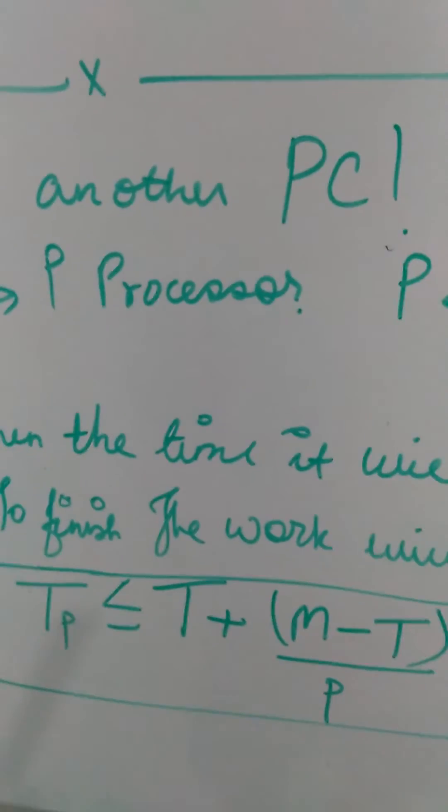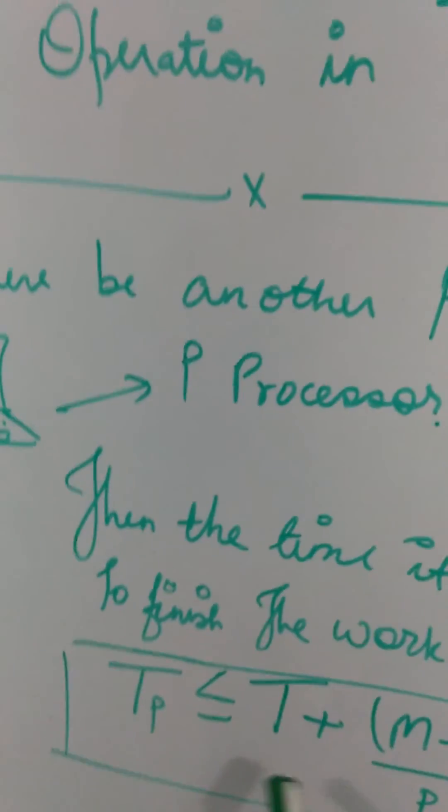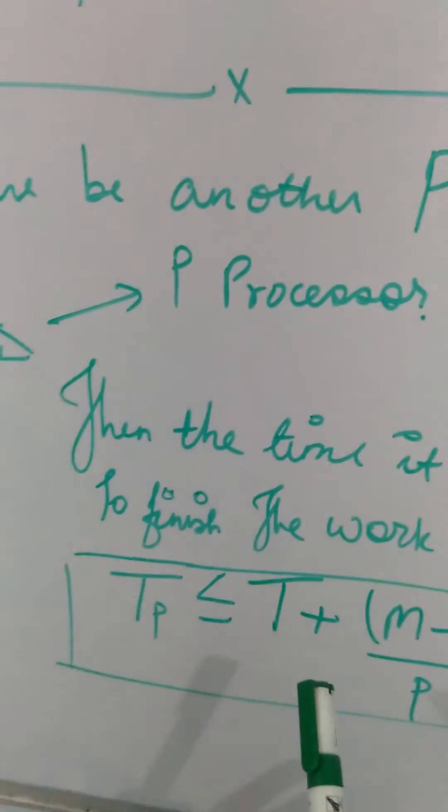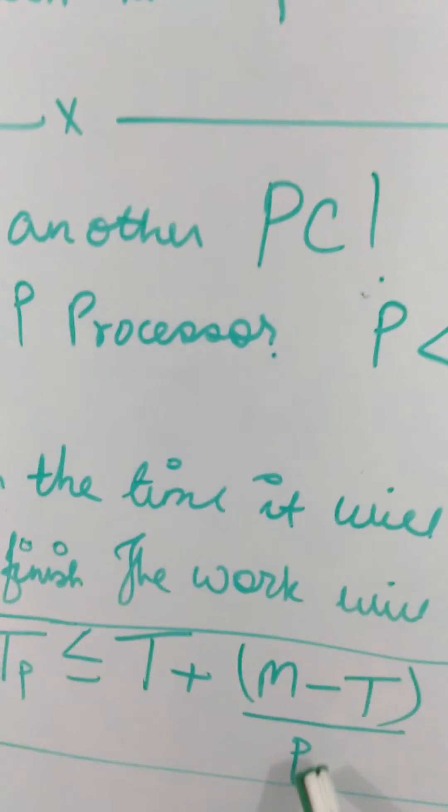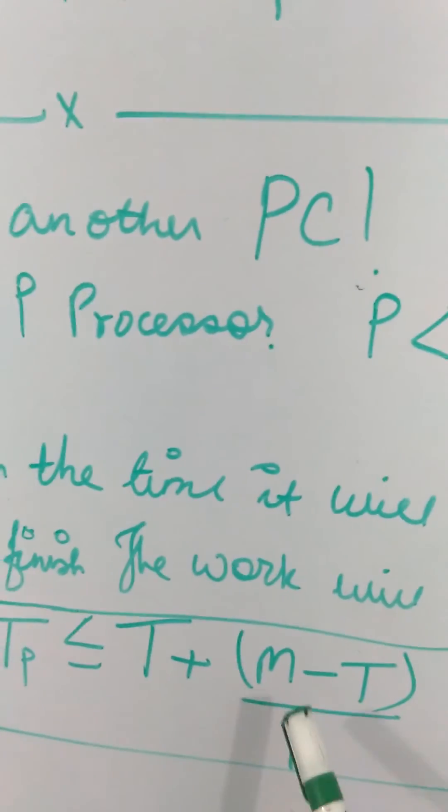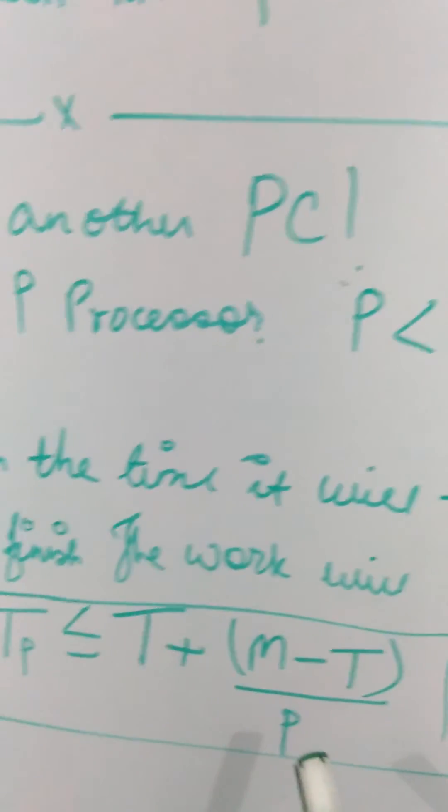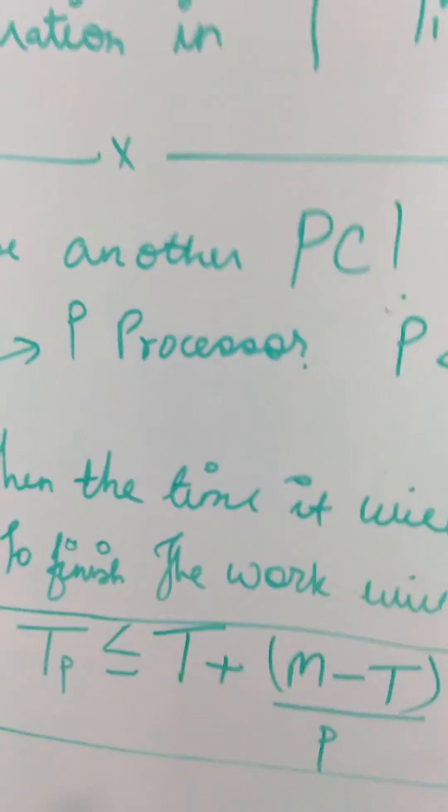This means it will do some amount of operations and the remaining operations will be done by the P processors. So M minus T will be the remaining operations, and divided by P will give the amount of time.